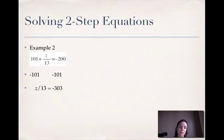I still have to get my z by itself. It's z divided by 13. I do the opposite of division, so I'm going to multiply on both sides. So I multiply by 13. It's going to leave me with z on the left. And negative 303 times 13 is negative 3939.